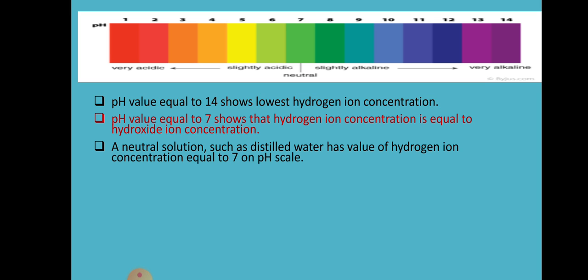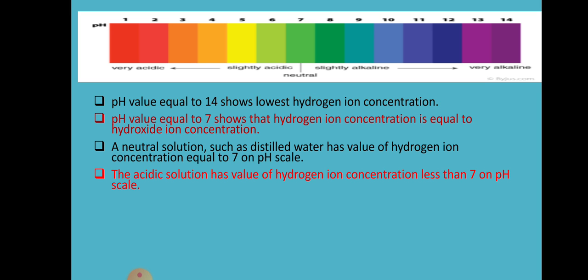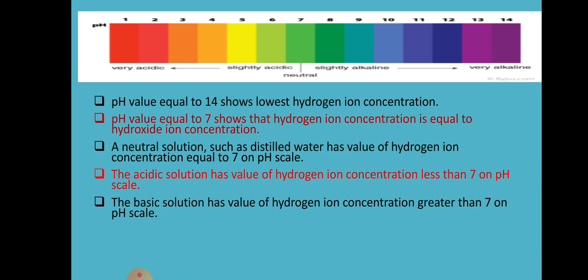For example, if a question asks you to give one example of a neutral solution which shows a pH range of 7, you can give distilled water, also called pure water. We can get distilled water from rain water. The acidic solution has a value of hydrogen ion concentration less than 7 — if the number you get is less than 7, the solution is acidic in nature.